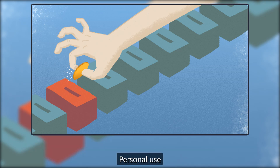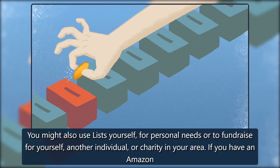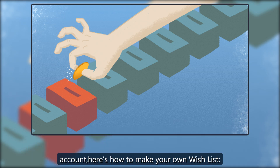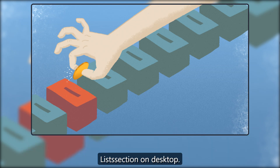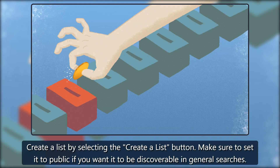Personal use. You might also use lists yourself, for personal needs or to fundraise for yourself, another individual, or a charity in your area. If you have an Amazon account, here's how to make your own wish list. After logging in on either desktop or the mobile app, find your lists by clicking the account menu — click the three lines in mobile or go to the accounts and list section on desktop. Create a list by selecting the 'Create a list' button.